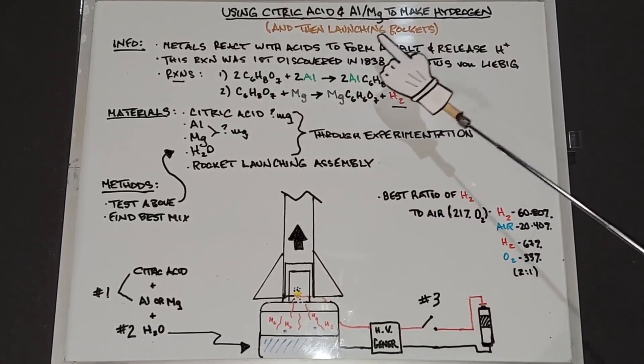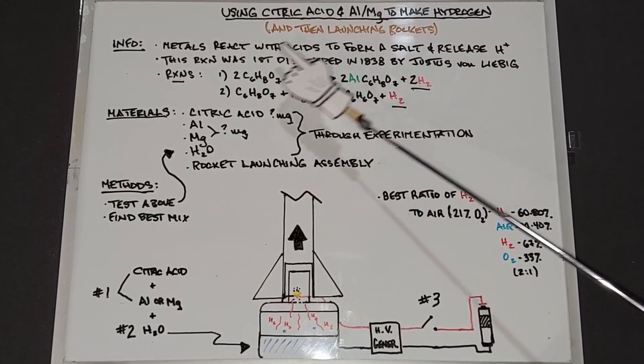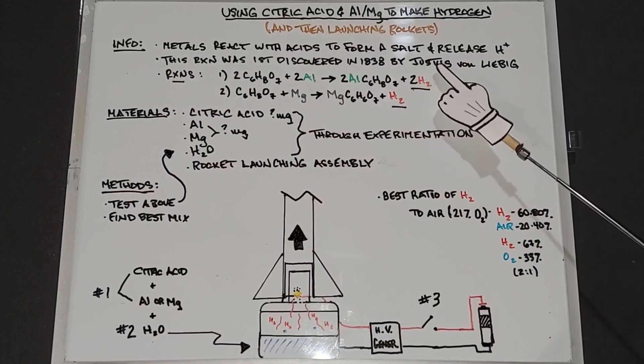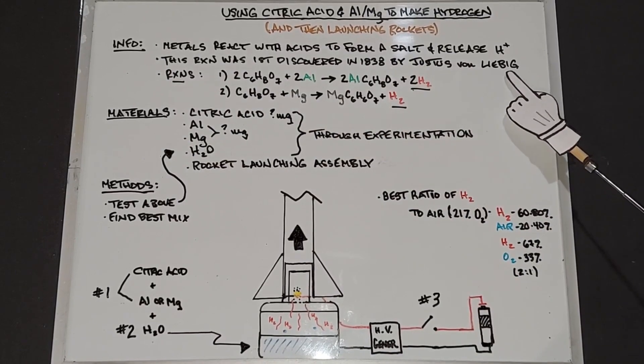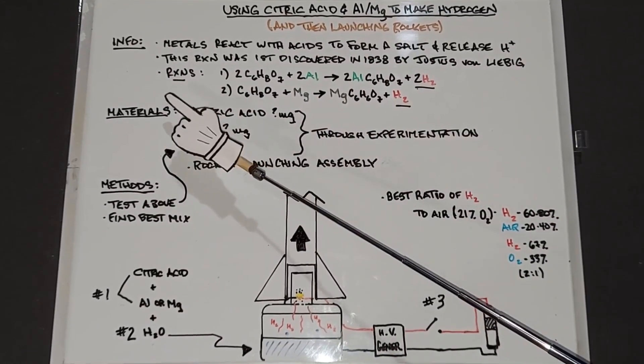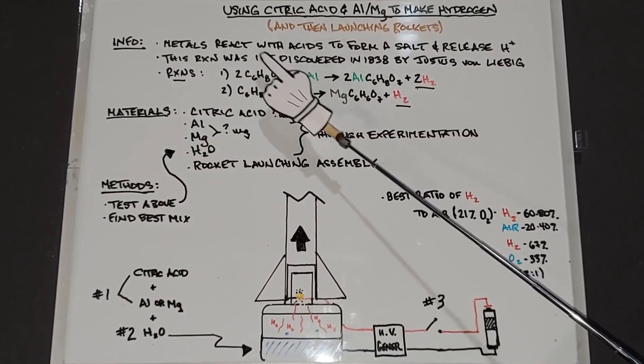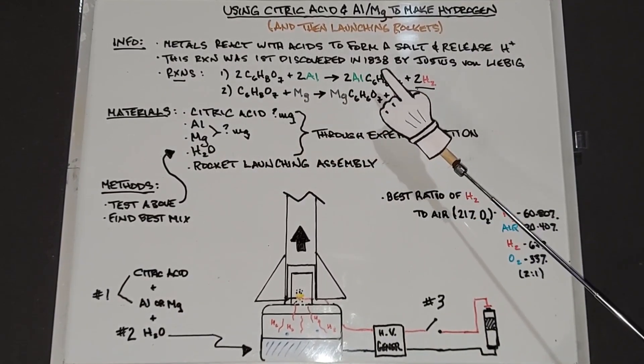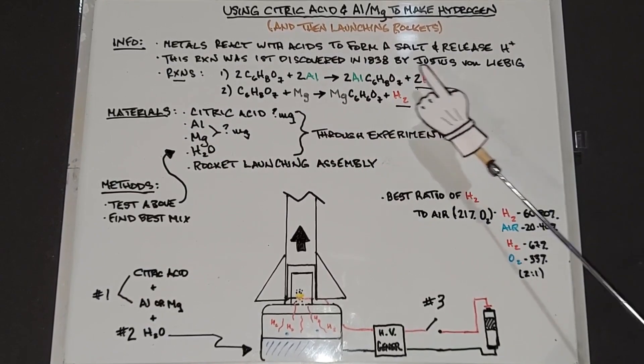Some general information: metals react with acids to form a salt and release hydrogen. This has been known for some time. The first reaction was discovered in 1838 by Justus von Liebig. There's only a couple reactions in this. The first one is two citric acids plus two aluminums yields two aluminum citrate plus two hydrogens.